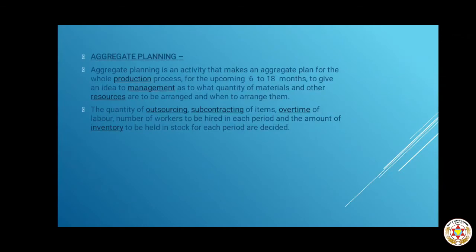First of all, we have to understand what is aggregate planning. Aggregate planning means you are planning for the long term and planning about each and every resource which you will use in manufacturing, planned for the coming five years or more. Aggregate planning is an activity that makes an aggregate plan for the whole production process for the upcoming six to eighteen months, to give an idea to management as to what quantity of materials and other resources are to be arranged and when.